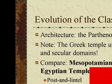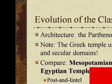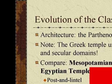Evolution of the classical style. Architecture of the Parthenon — note that Greek temples unite the religious and secular domains. Compare with the Mesopotamian Ziggurat, Egyptian temples, post and lintel construction, and pediment sculpture.